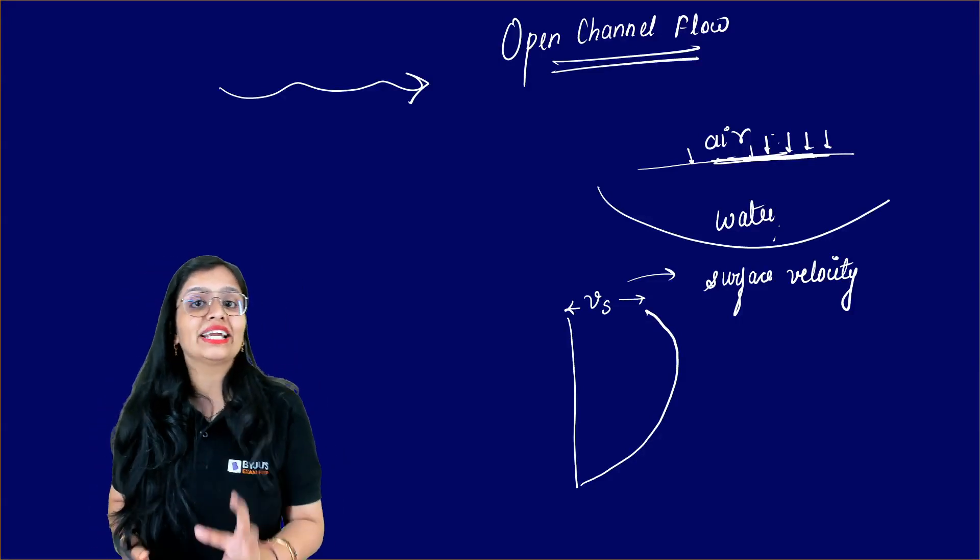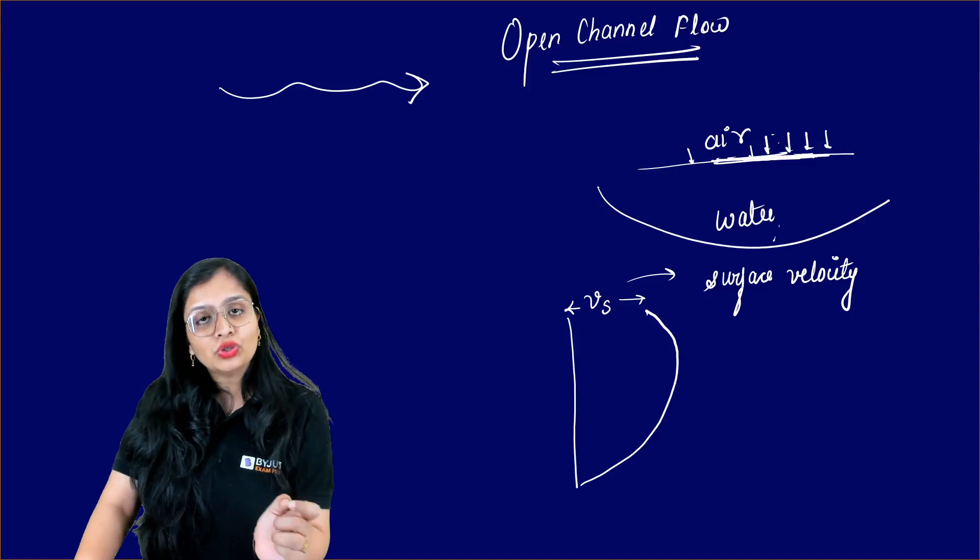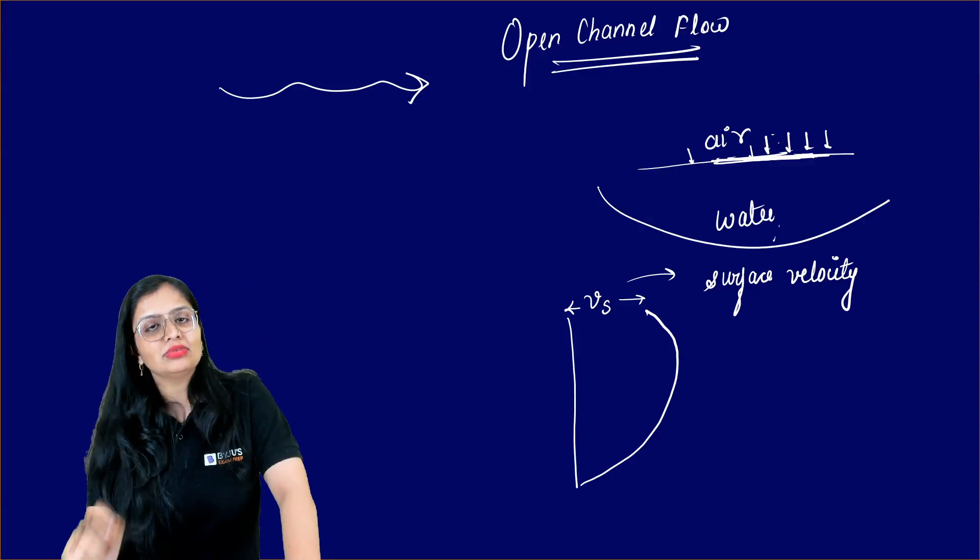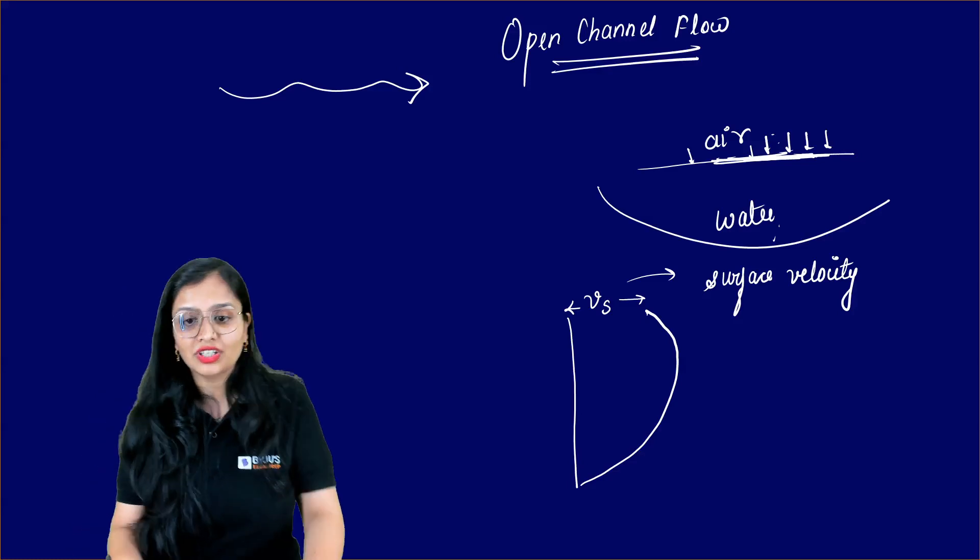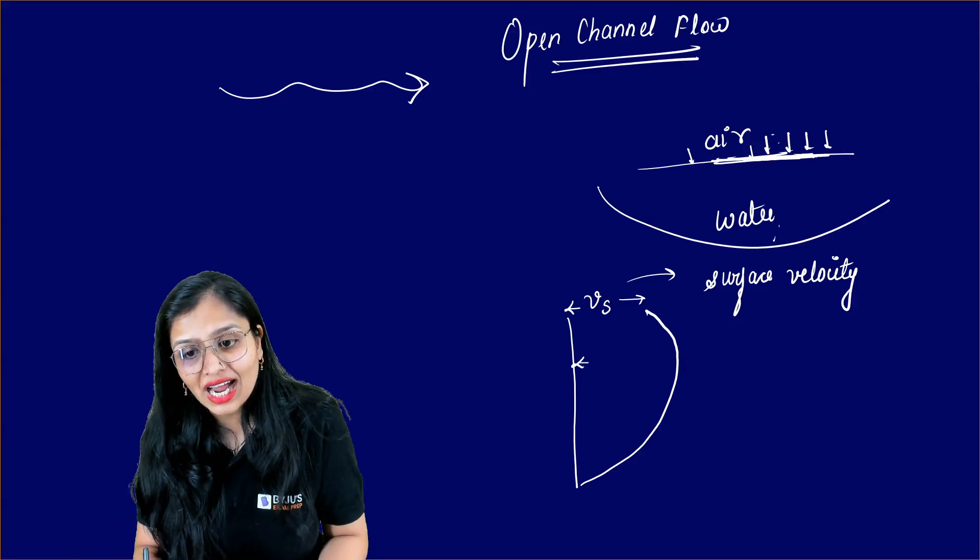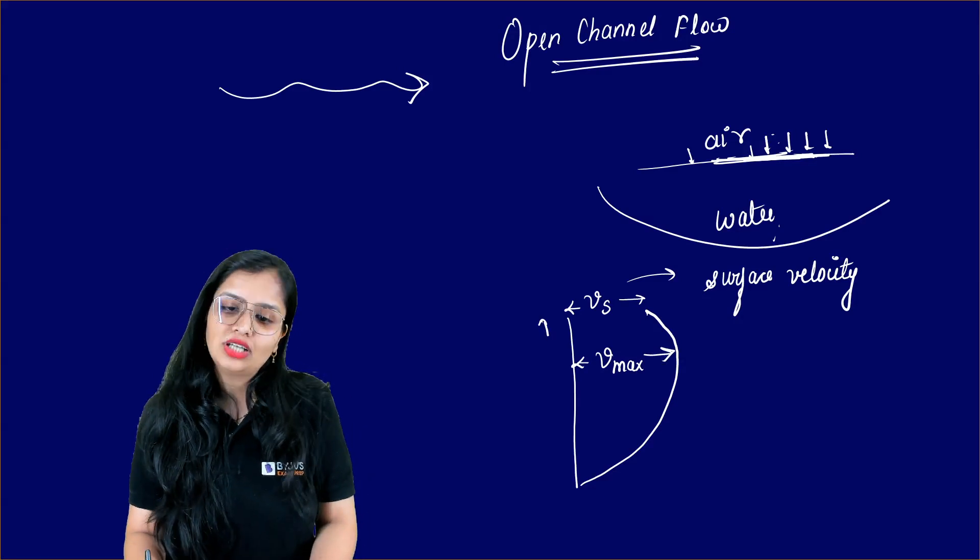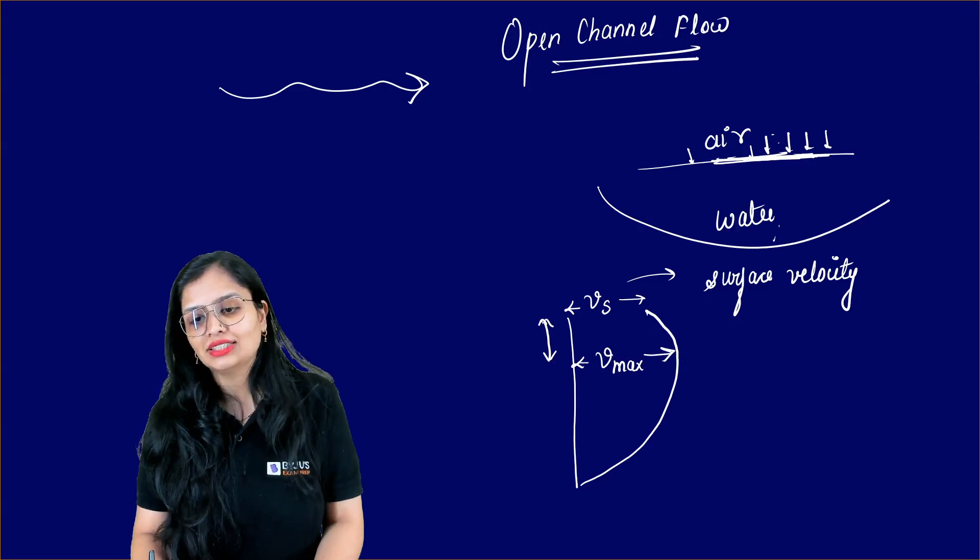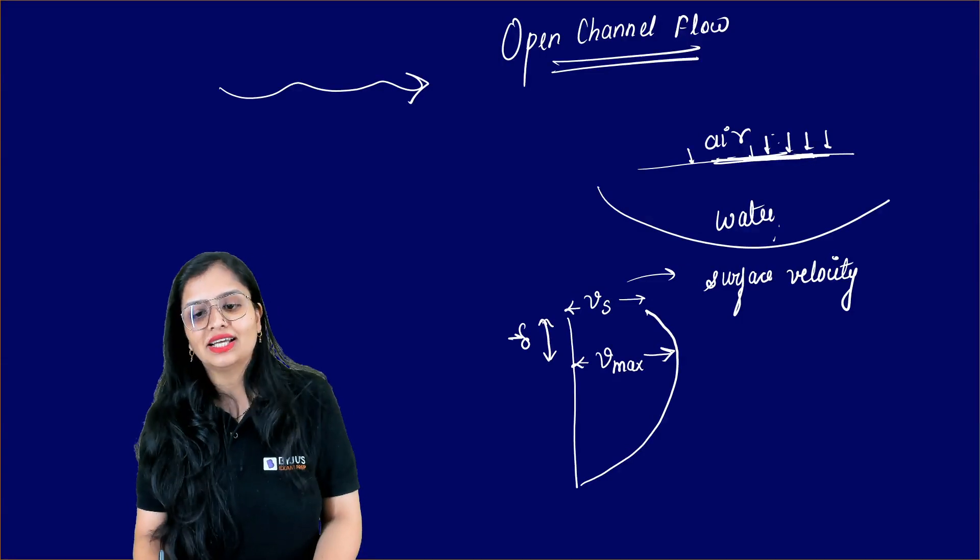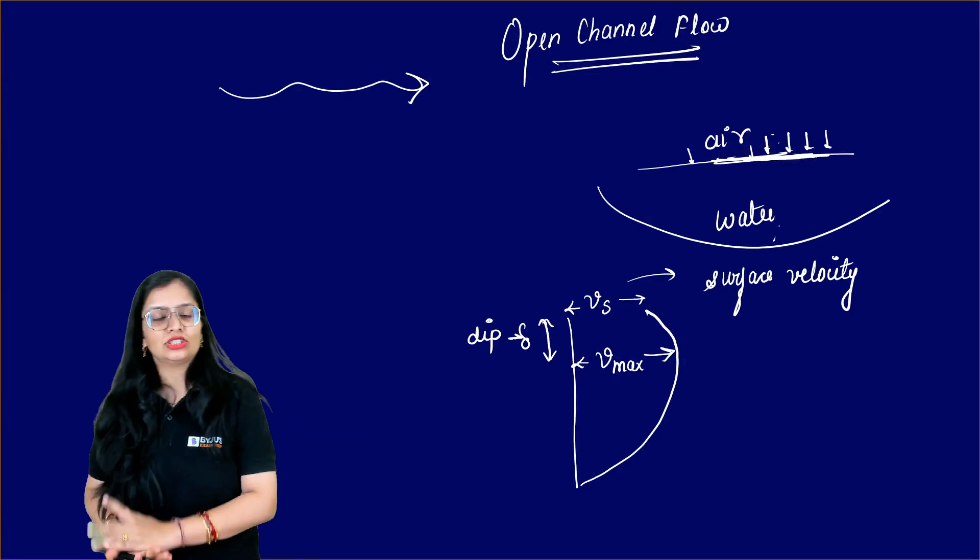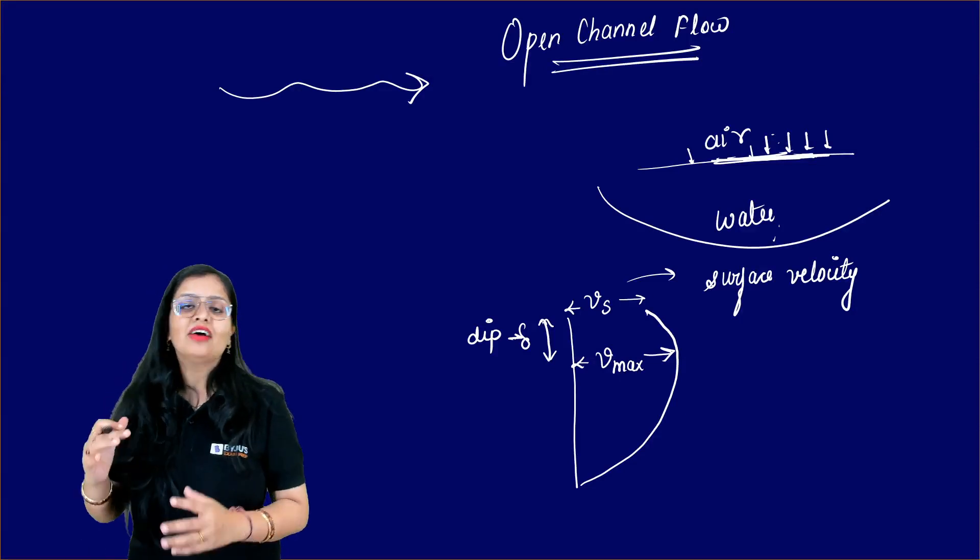Due to the secondary currents, you are not able to see maximum velocity occurring at the surface. However, it occurs at a certain section downstream of it. And how much downstream it occurs, you call it as dip. This delta is the dip.